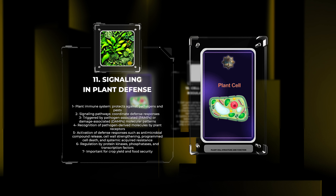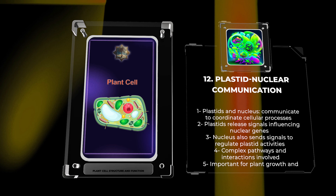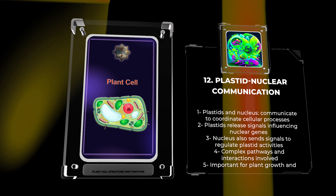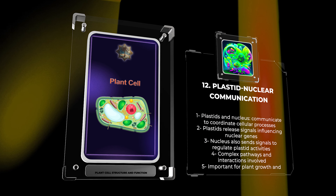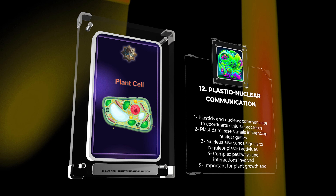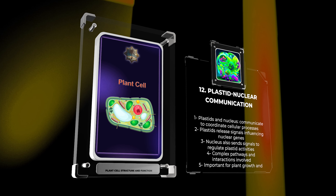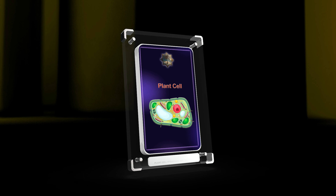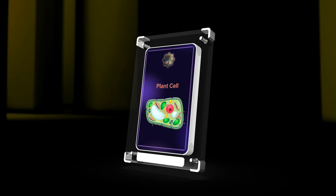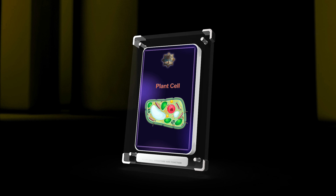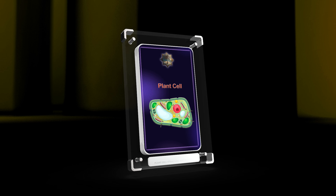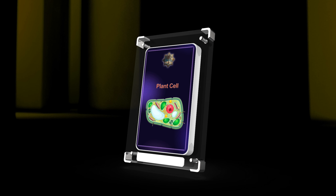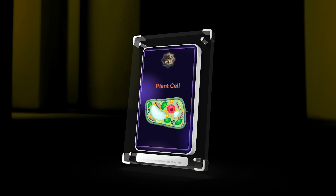We will explore the communication between plastids and the nucleus in plant cells. Plastids and the nucleus need to communicate to coordinate important cellular processes. Plastids release signals that influence nuclear genes, while the nucleus can also send signals to regulate plastid activities. This communication involves complex pathways and interactions, and understanding this process is important for plant growth and development.